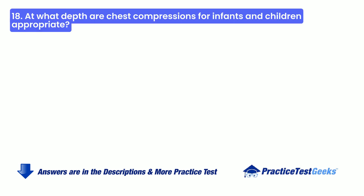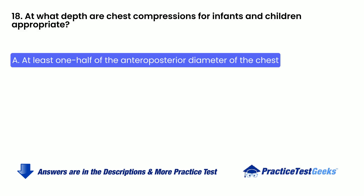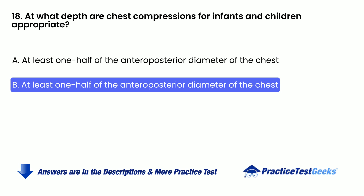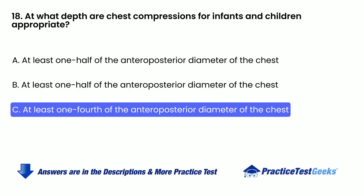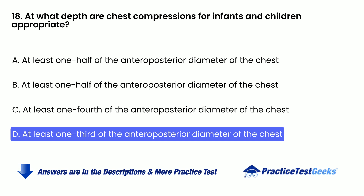At what depth are chest compressions for infants and children appropriate? A. At least 1.5 inches. B. At least 1.5 of the anterior-posterior diameter of the chest. C. At least one-fourth of the anterior-posterior diameter of the chest. D. At least one-third of the anterior-posterior diameter of the chest.